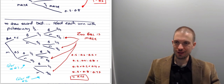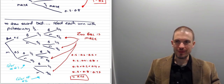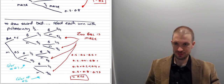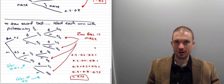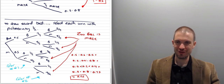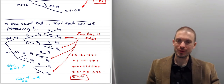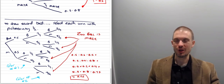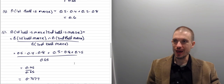The likelihood of each end node is the product of the probabilities along the tree. The probability that the second ball is maize is: 0.5 × 0.6 × 0.5 + 0.5 × 0.4 × 0.8 + 0.5 × 0.2 × 0.4 + 0.5 × 0.8 × 0.75, which gives us a probability of 0.65.